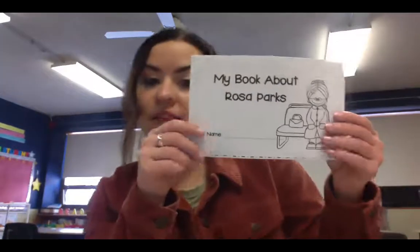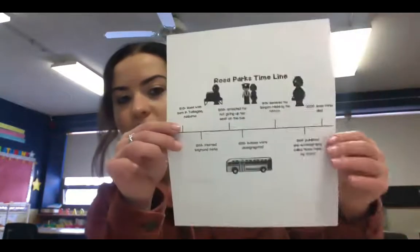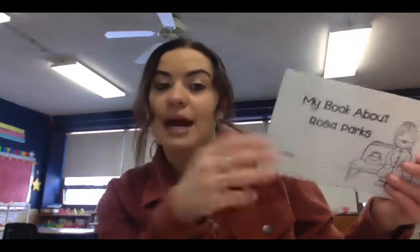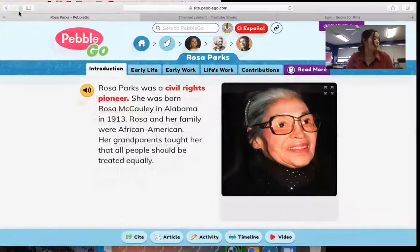Hey, first grade. Today we are going to start learning about Rosa Parks. We did start talking about Rosa Parks this morning at morning meeting and we read this book right here, my book about Rosa Parks. We also talked about this passage in the front of your packet and the timeline of her life. Timelines are great text features that help map out major events. We are going to watch a Pebble Go about her, and then I will explain your Rosa Parks assignments and your phonics assignments today.